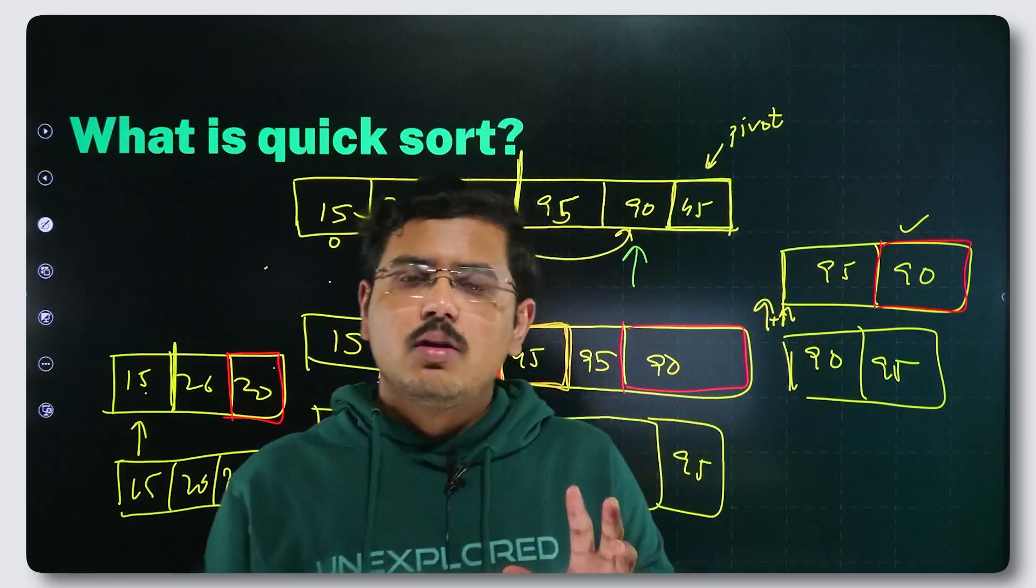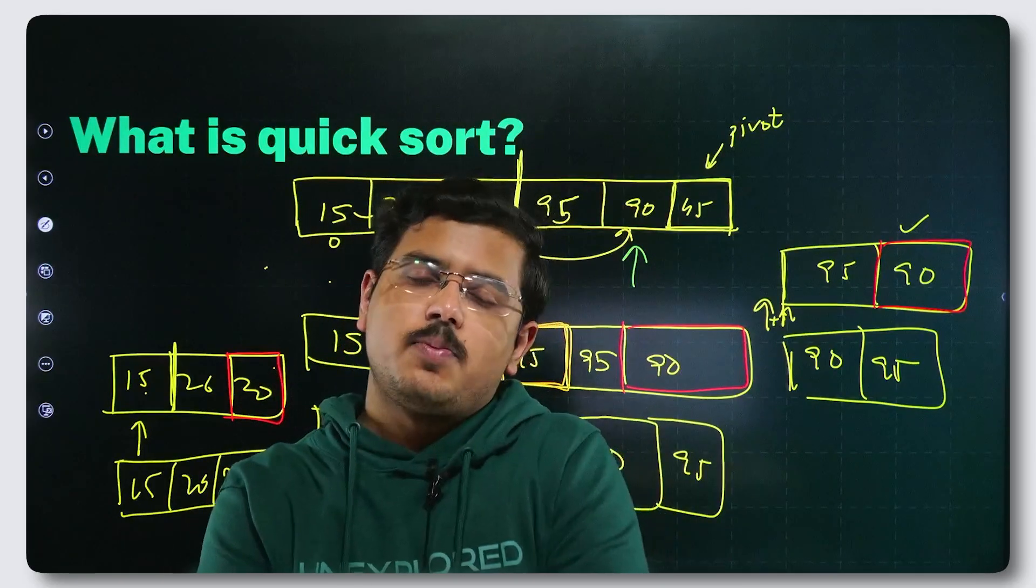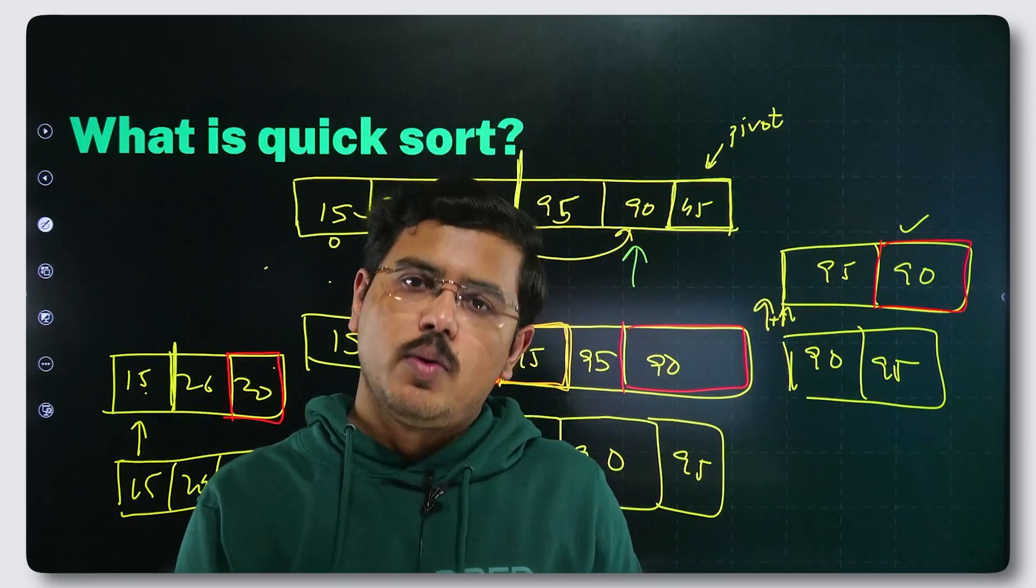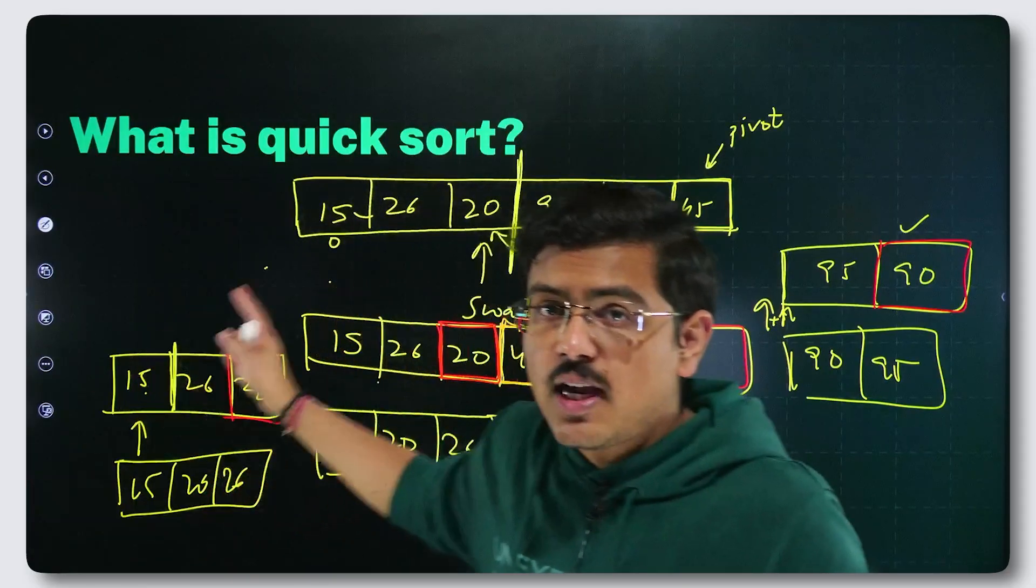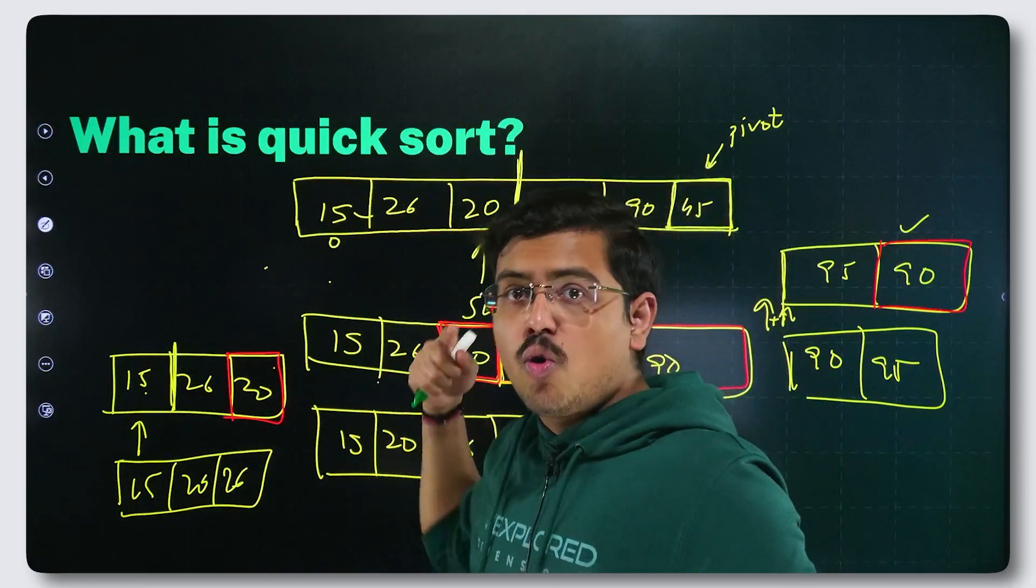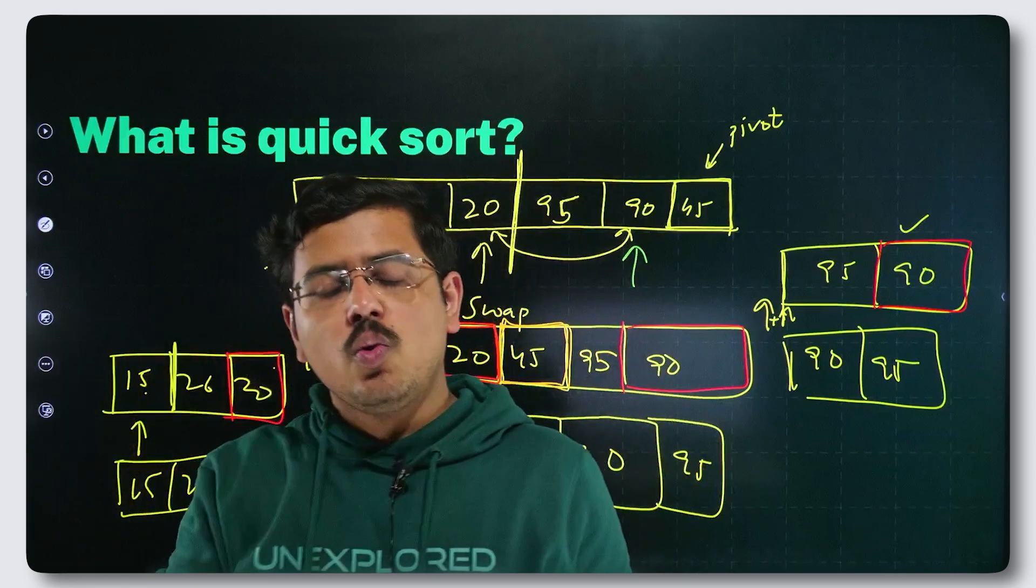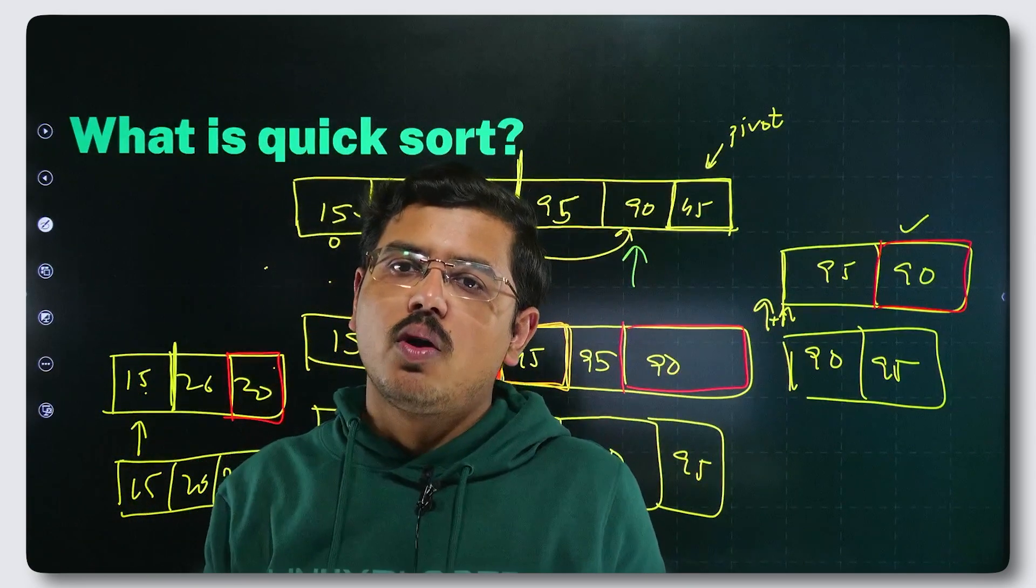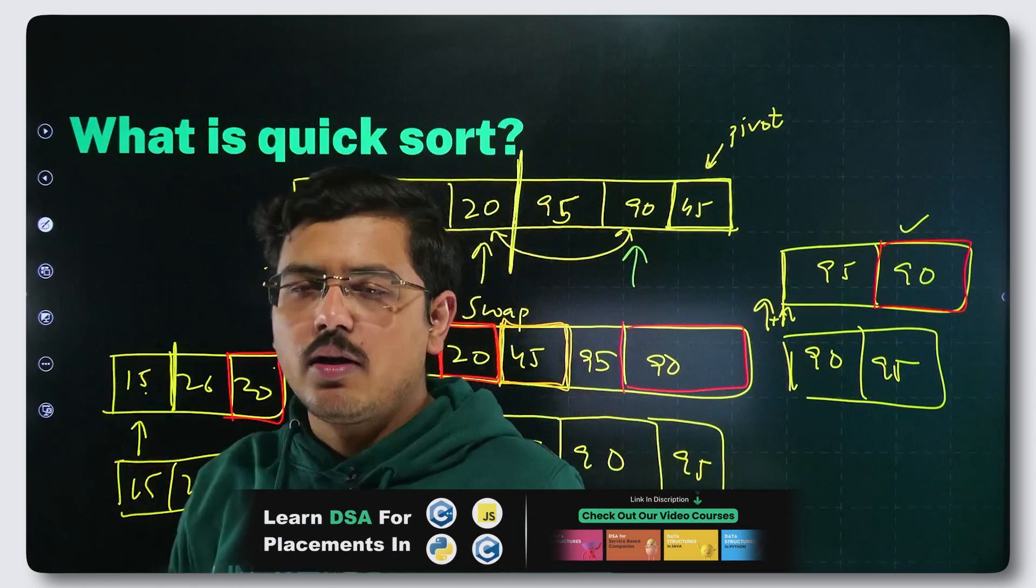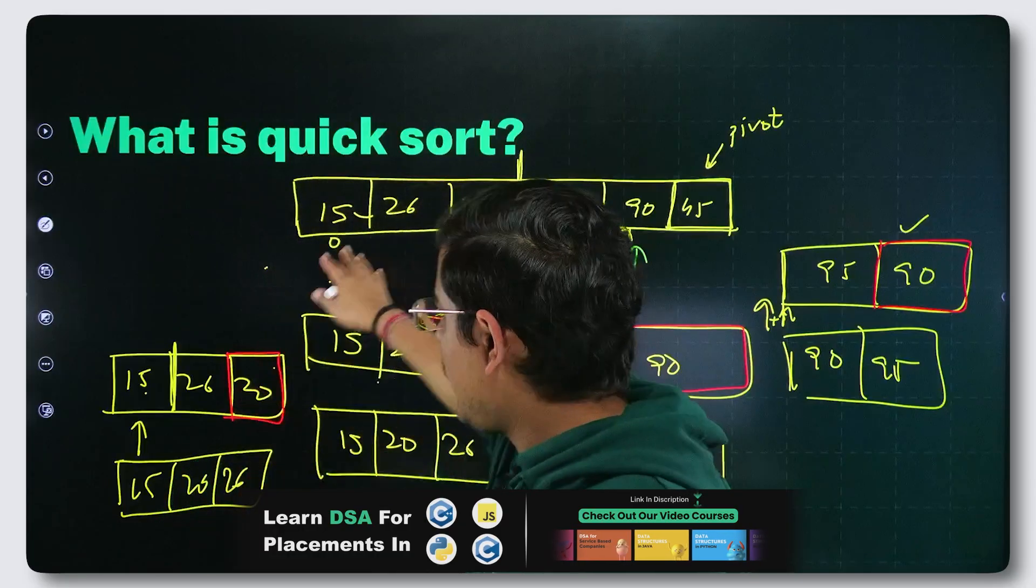It might look a bit different from the explanations you usually find for quicksort, but once I show you the code for the same. Once I show you the code implementation of quicksort, you will understand why quicksort behaves in such a manner. You will understand why did I explain you like this.